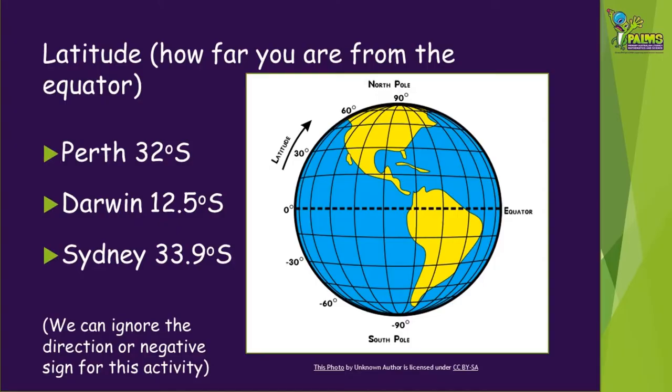Using the internet or an atlas, find out the latitude for the city or town where you are. Latitude is the measurement of how far north or south you are from the equator. We are in Perth, so we will be using 32 degrees as our latitude.